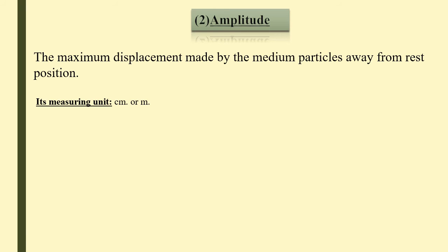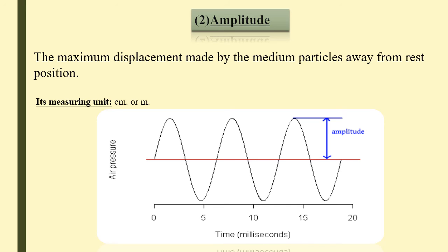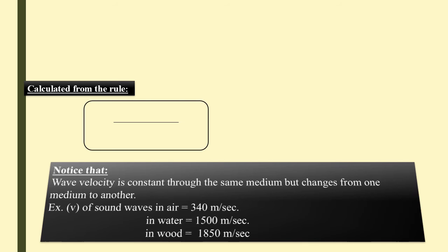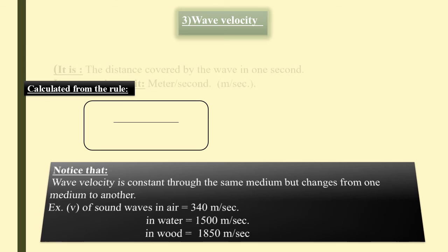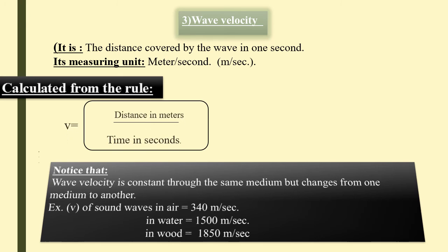Number two: amplitude — the maximum displacement made by medium particles away from the rest position. The measuring unit is centimeters or meters. Number three: wave velocity — the distance covered by a wave in one second. The measuring unit is meters per second. It is calculated by: v = distance ÷ time. Wave velocity is constant through the same medium, but changes when moving from one medium to another.